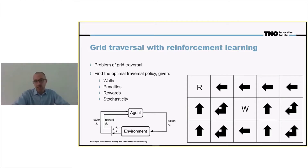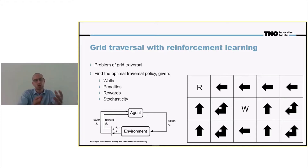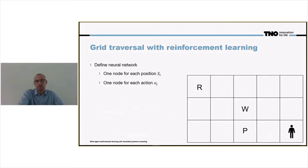As I said, learning this policy can be quite hard. So we try to use quantum approaches to optimize and improve upon this. What do we do? We define a neural network where each node — where each position is assigned a node.